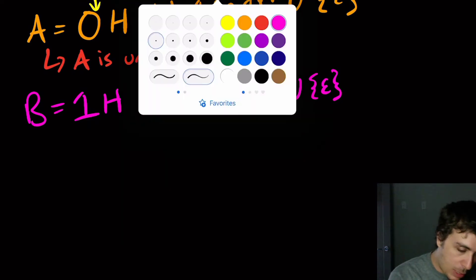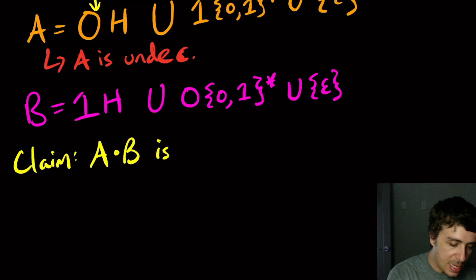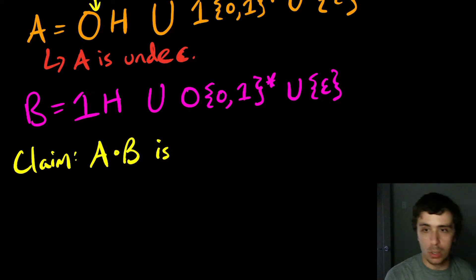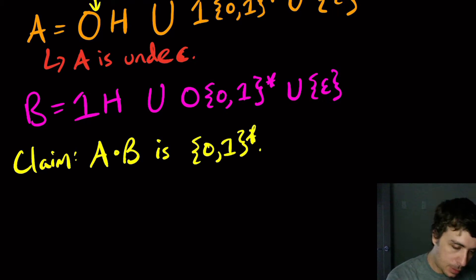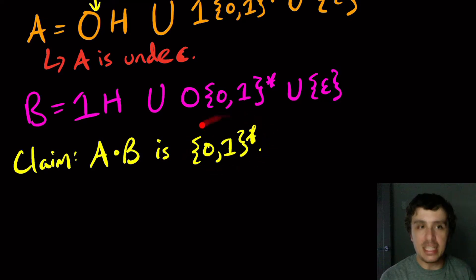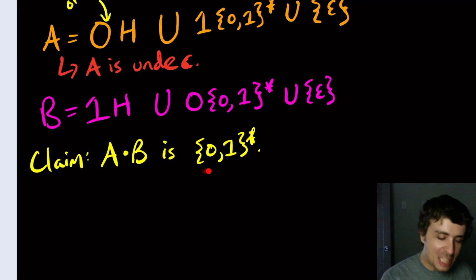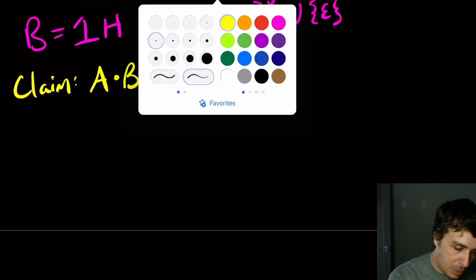What I want to claim here is that A concatenated with B is in fact equal to {0,1}*. It's literally {0,1}*, which is very obviously decidable — not only can we make a DFA for it, you can just say yes on all input strings. So let's actually figure out why this is the case by writing down A concatenated with B.